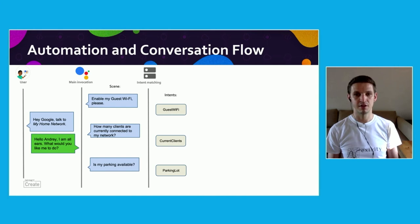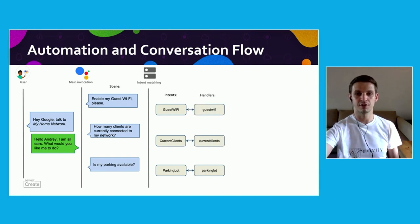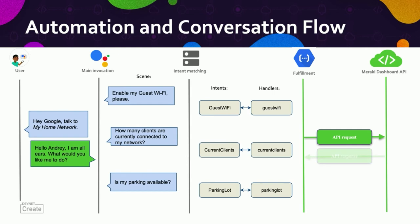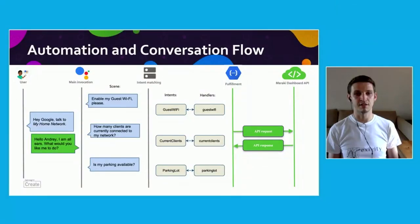Intents go hand in hand with handlers, which essentially act as functions. We're using Google Functions, which is part of the Google suite, as a fulfillment platform. Although it's a paid service, the first two million invocations per month are free, which should be more than enough for our particular use case. Google Function executes our code, it sends an API call to the Meraki dashboard, and then we get a response from the dashboard as a JSON data structure, which we need to parse and derive the information from. For example, when we ask for the number of clients connected, we get information such as MAC address and device type, but we're only interested in the number of devices that are currently online.